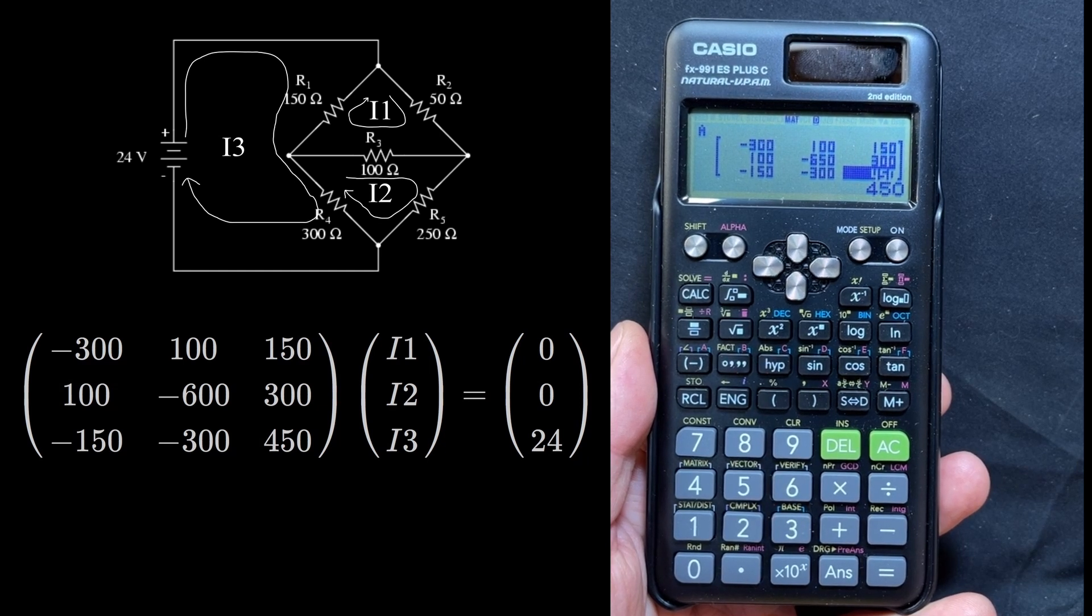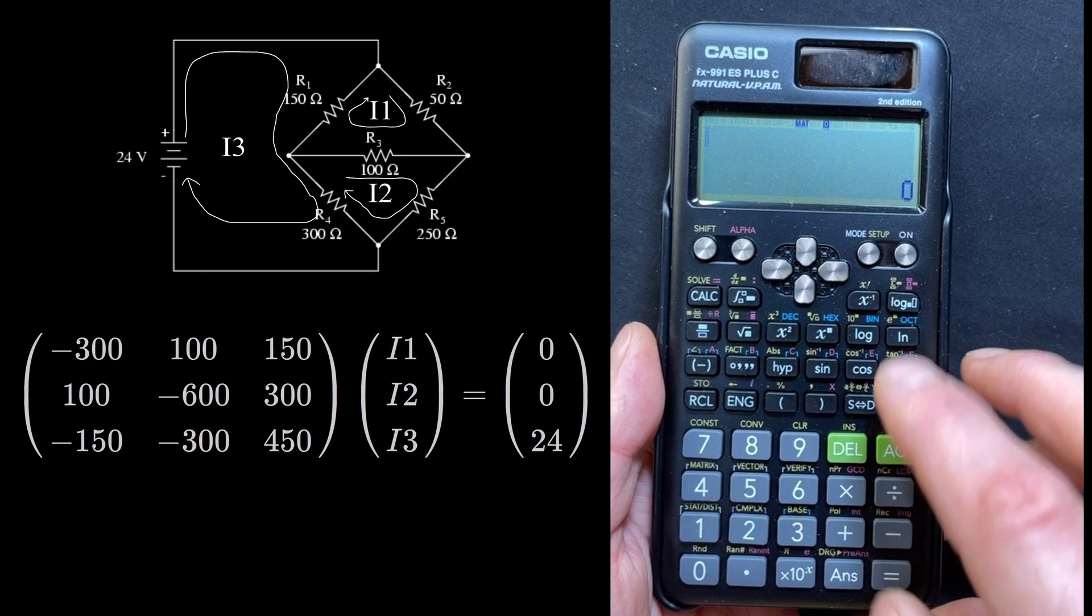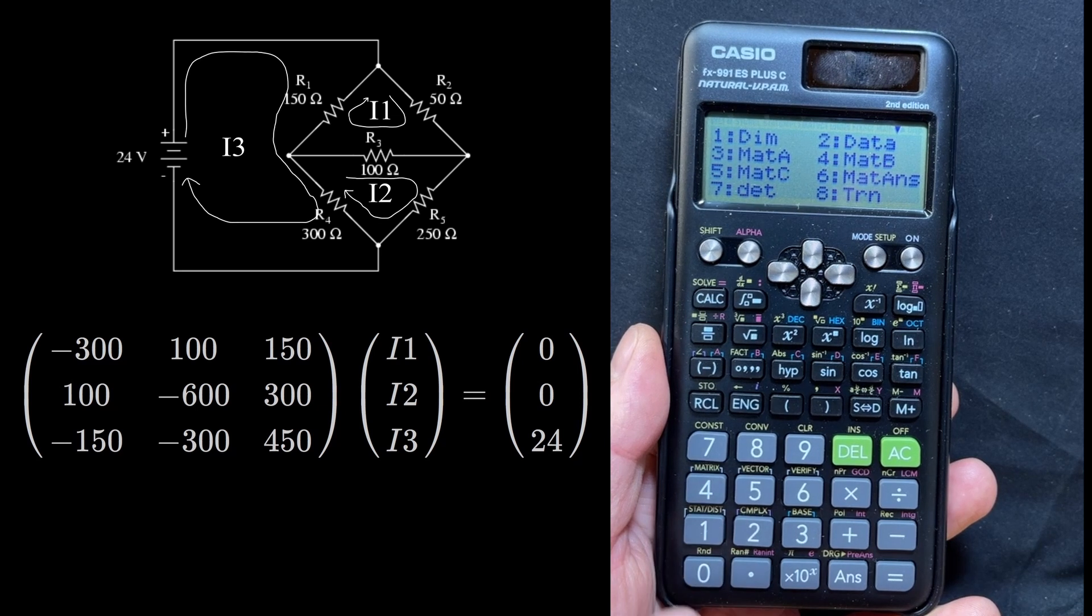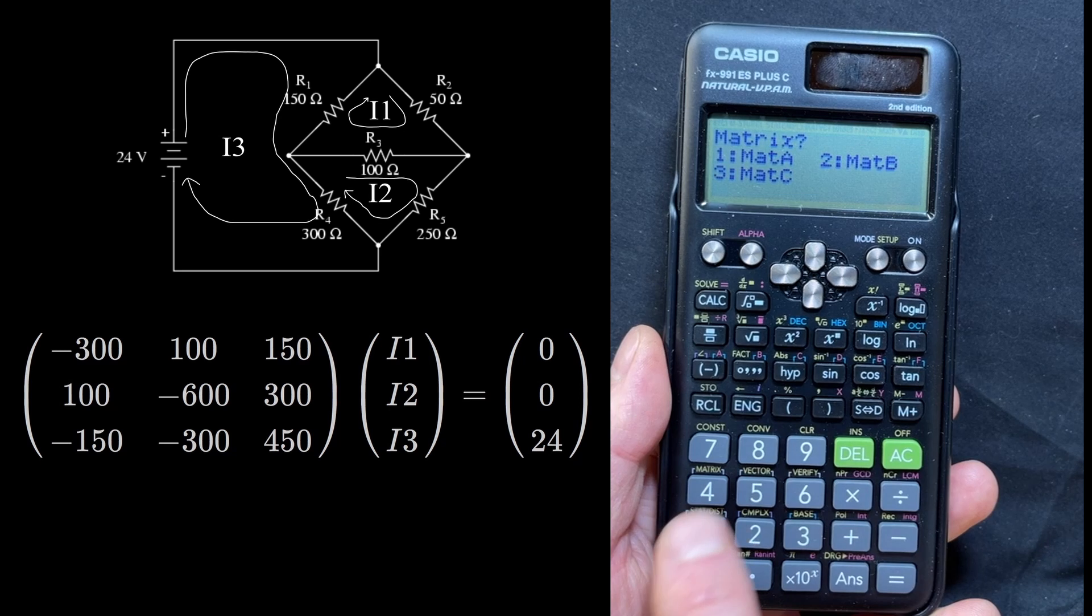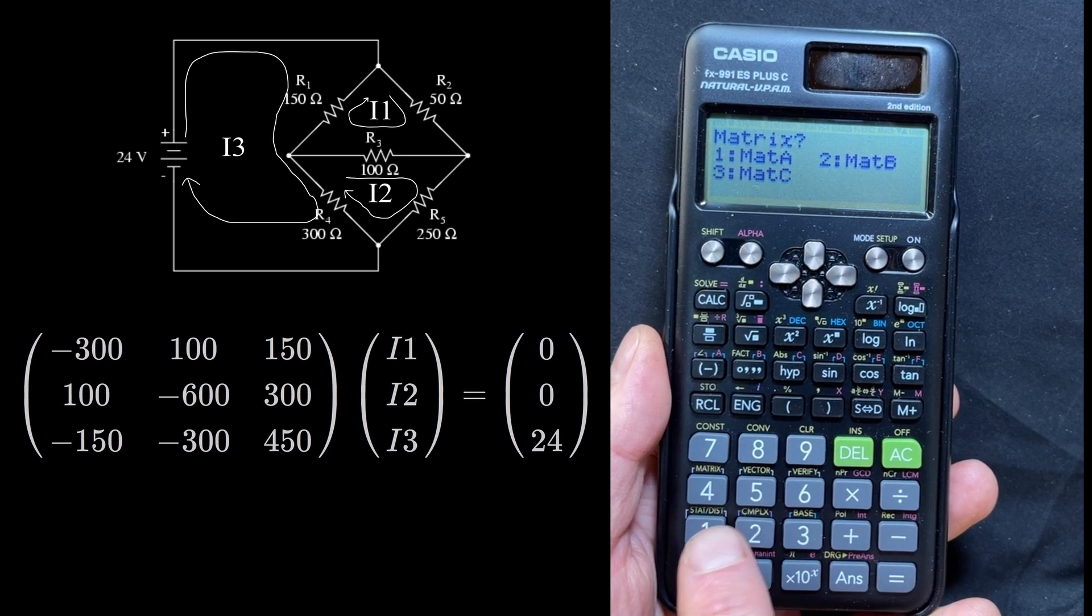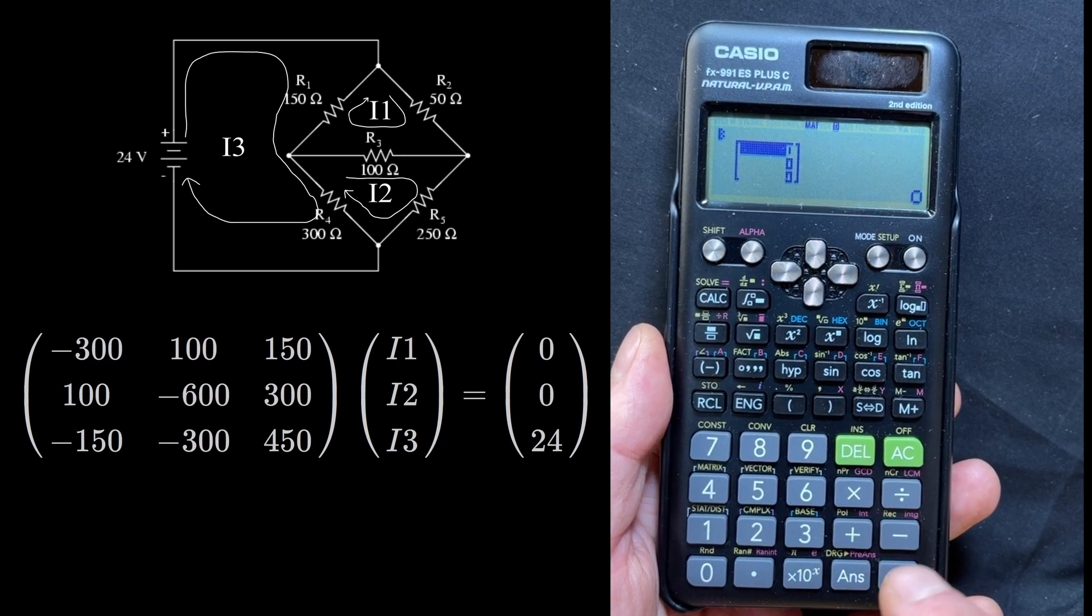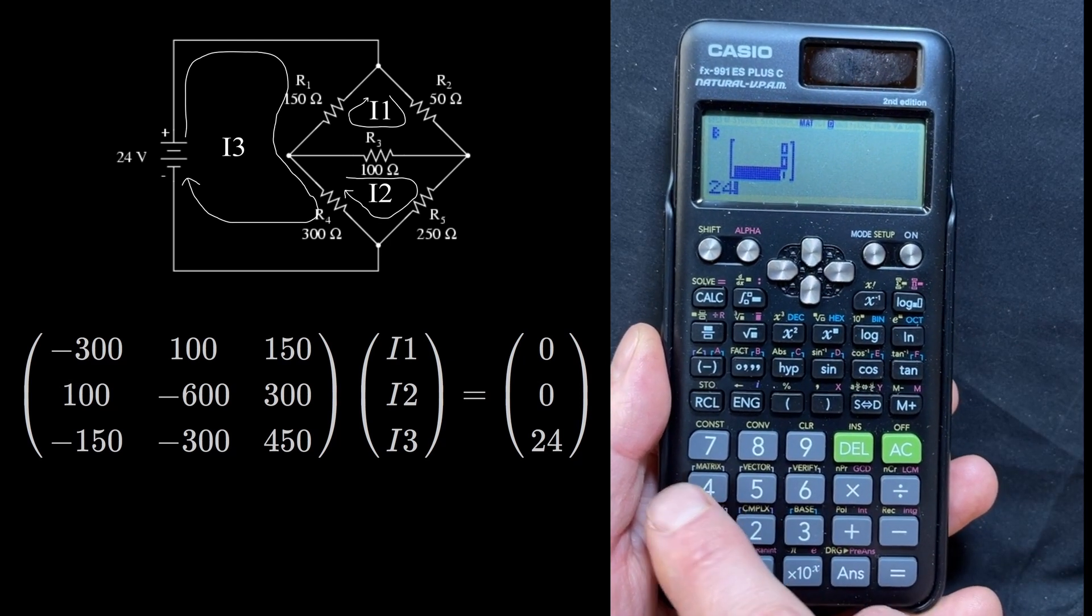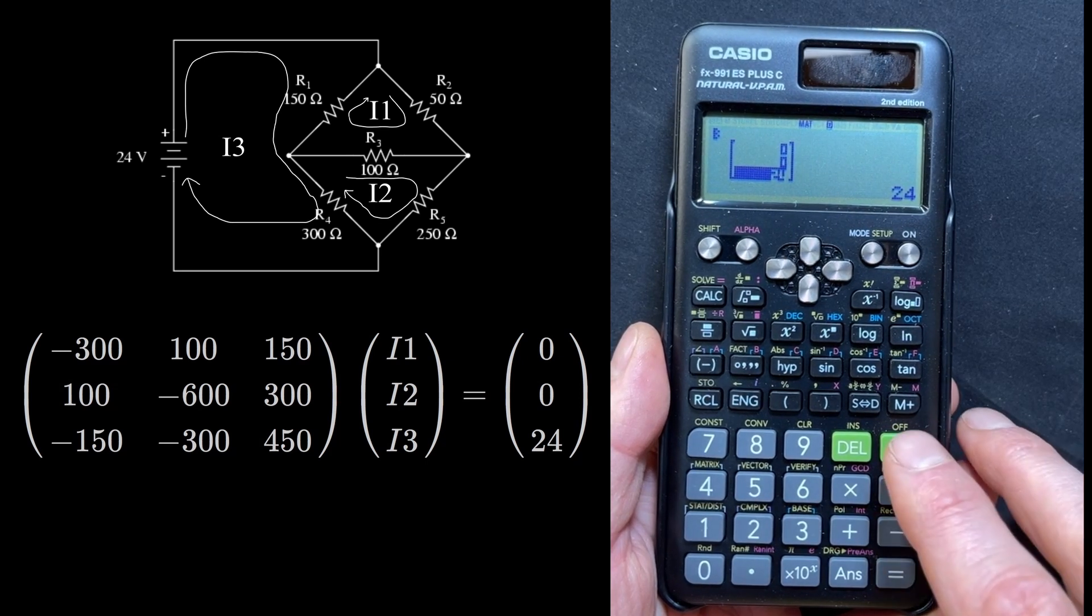Next it's time to set up matrix B. We can just get out of this, and then if we go shift 4, this is all the matrix stuff that we can set up. If we go into 2, this allows us to set up the matrix again. We can pick which matrix to set up, so we're going to set up matrix B. B is a 3x1 matrix, and it's fairly straightforward at 0, 0, 24. Okay, now matrix A and matrix B are now set up.